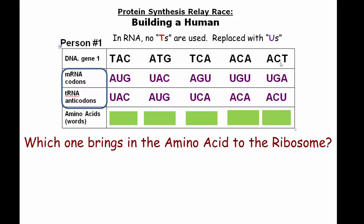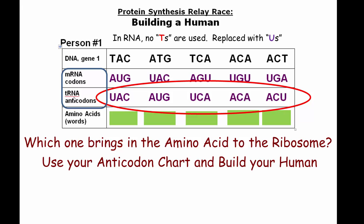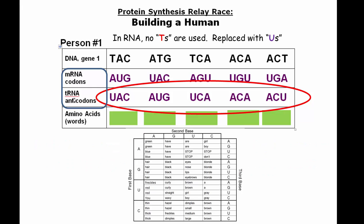Which one do we actually use to make the amino acid? Which one actually brings the amino acid to the ribosome — is it the mRNA or is it the tRNA? The answer is the tRNA. So we're going to use the anticodon chart, which I'll show you in a second, and we're going to build the human.